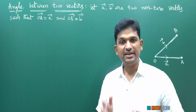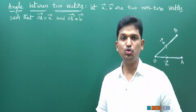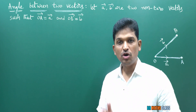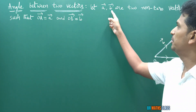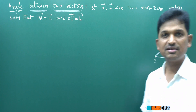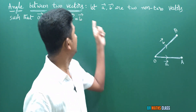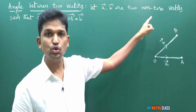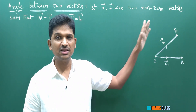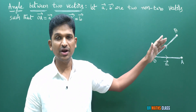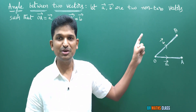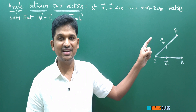What is the definition of angle between two vectors? First, I'll consider two vectors. Let a-bar, b-bar be two non-zero vectors. It is important — a-bar, b-bar are two non-zero vectors. If both the vectors are zero vectors, then the angle between the vectors is not defined. If any one of them is a zero vector, then also the angle between the vectors is not defined.